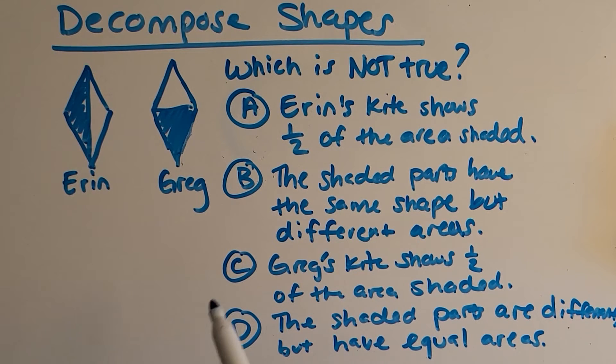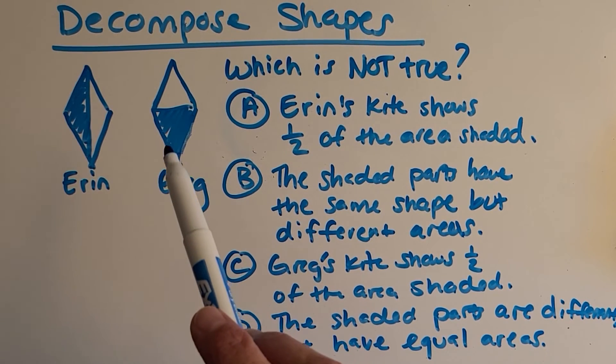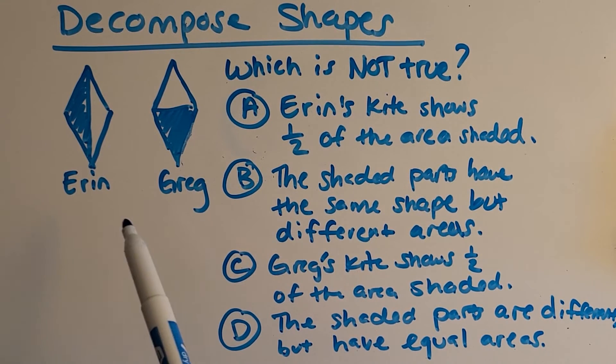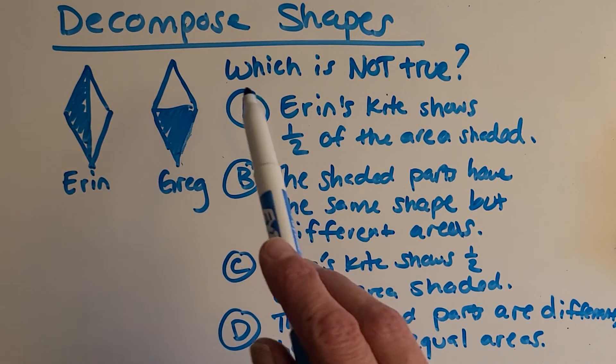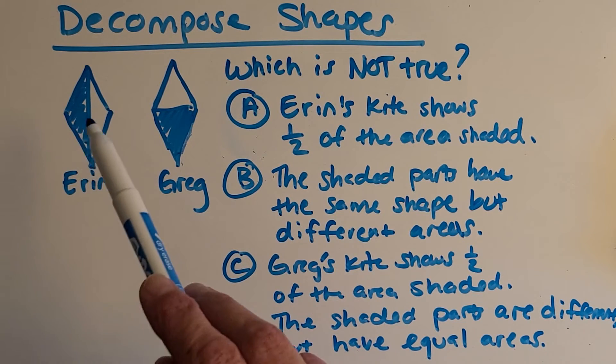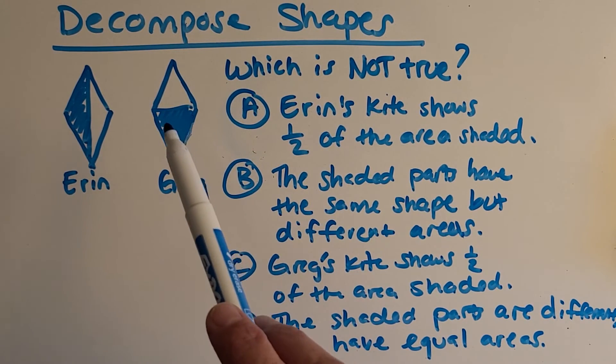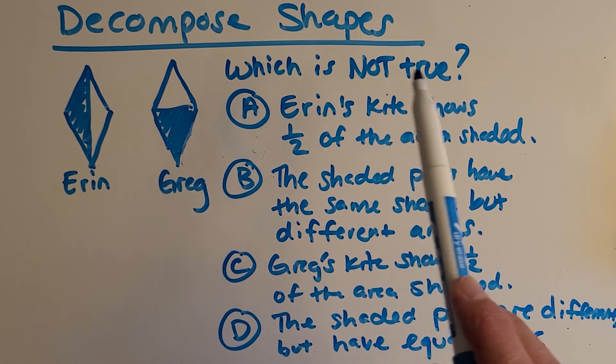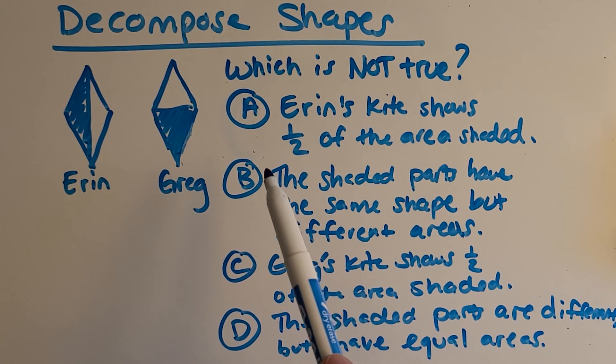Alright, I got one more problem for you. You're getting really good at understanding what these decomposed shapes are all about. It's all about finding equal areas so that we can name it a fraction. So let's take a look at this one. We are looking at two different kites. We've got Aaron's kite and Greg's kite. And I want to know which one of these statements is not true.